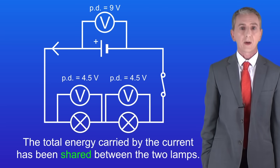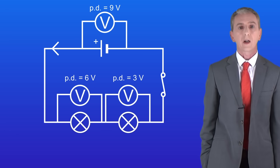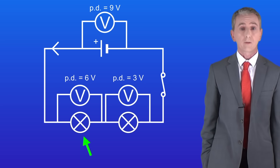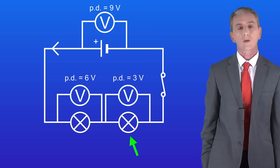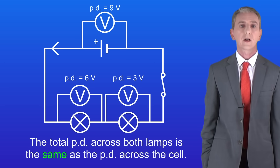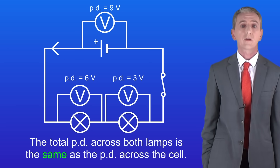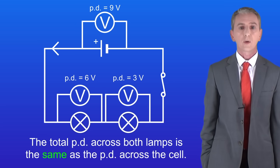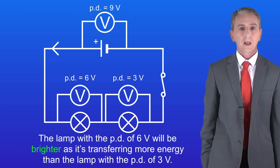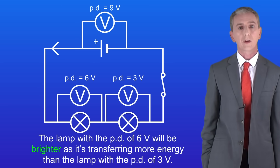The two lamps don't have to be identical. In this circuit there are two different lamps — one has a potential difference of 6 volts and the other has a potential difference of 3 volts. The key point is that the total potential difference across both lamps equals the potential difference across the cell — 9 volts, meaning 9 joules of energy are transferred per coulomb. The energy is shared between the two lamps, and the lamp with 6 volts will be brighter as it's transferring more energy.